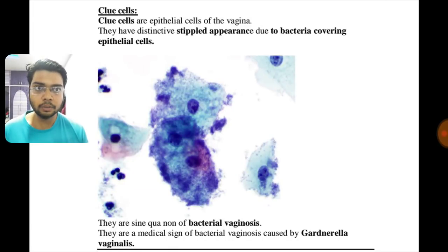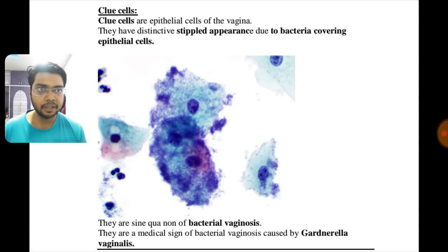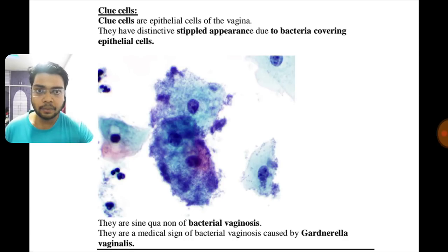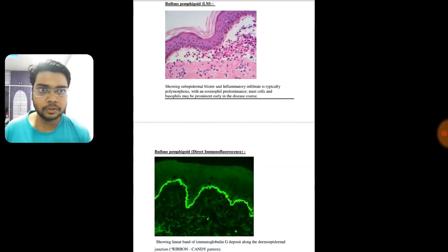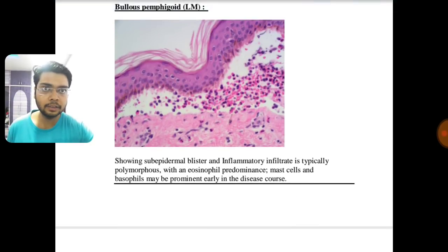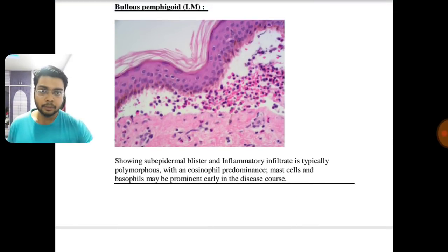The next picture shows clue cells having a stippled appearance due to bacteria covering the epithelial cells, seen in bacterial vaginosis caused by Gardnerella vaginalis.